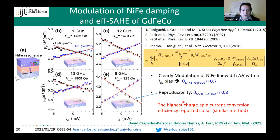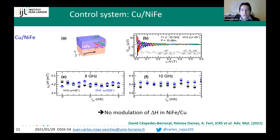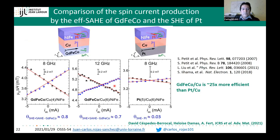For control experiments: in permalloy/copper, we see no modulation of damping, as expected since copper has no spin Hall effect. More importantly, replacing GdFeCo with platinum—a well-known spin Hall effect material—in a Pt/Cu/Py stack also shows a nice modulation of damping, but the quantified efficiency is only about 0.03, which is 20–25 times smaller than GdFeCo/Cu. This confirms our giant efficiency result in GdFeCo.